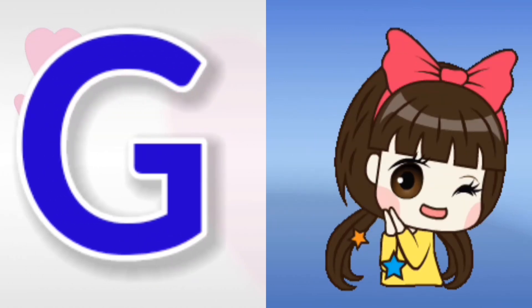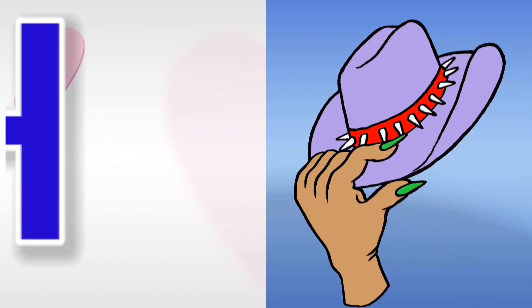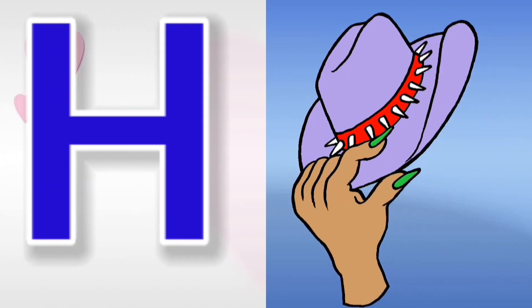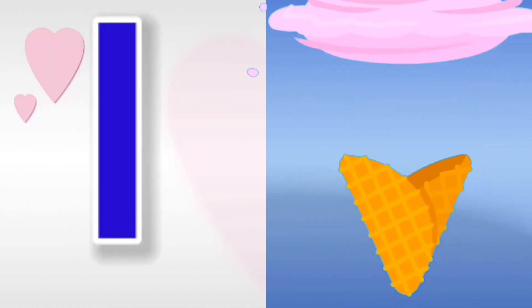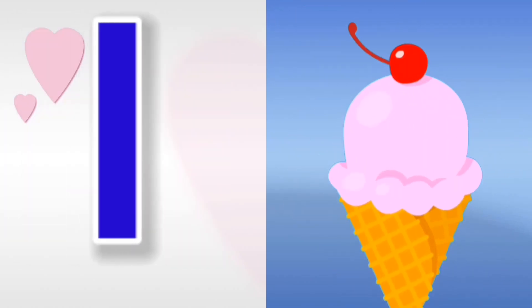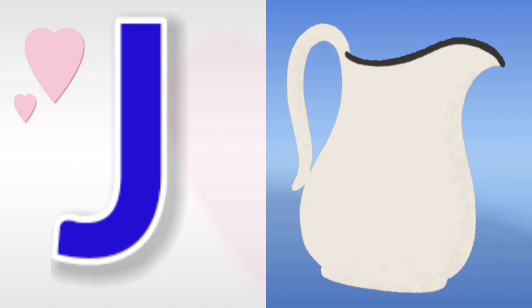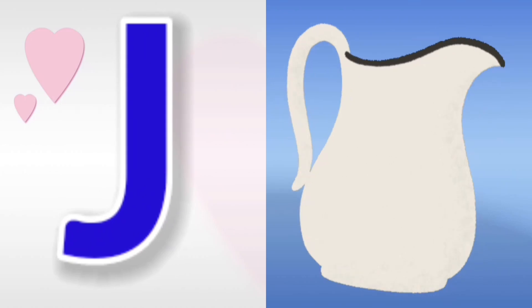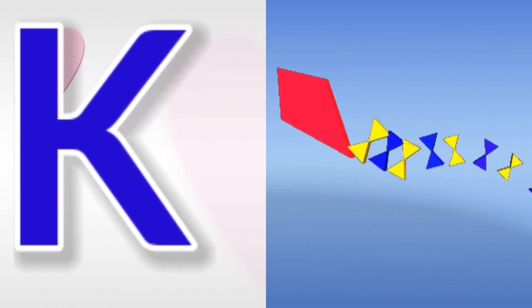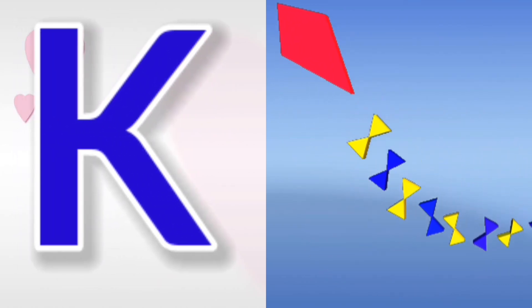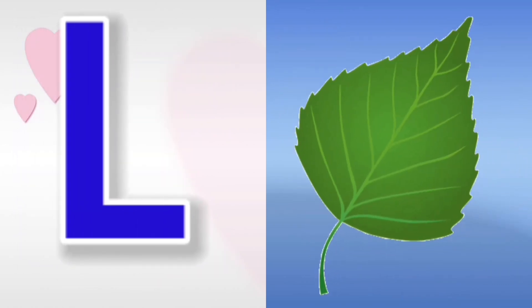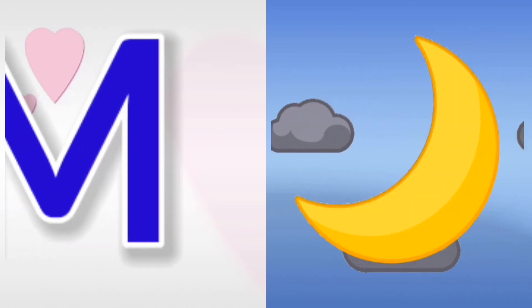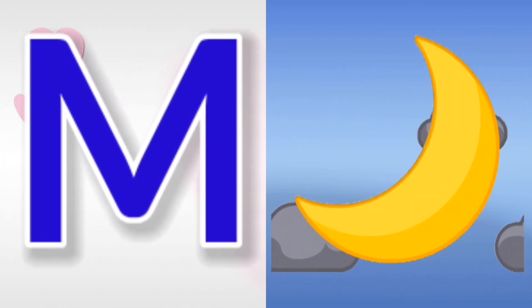G for girl, H for hat, I for ice cream, J for judge, K for kite, L for leaf, M for moon.